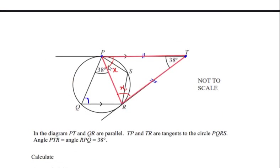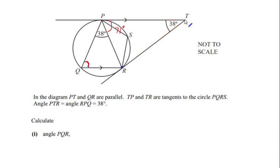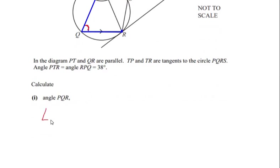We have found that angle P and angle R are each 71 degrees. Now to find angle PQR, let us consider the parallel lines PT and QR. Line TP is parallel to line QR, and PQ is acting as a transversal. Therefore angle P and angle Q act as co-interior angles.